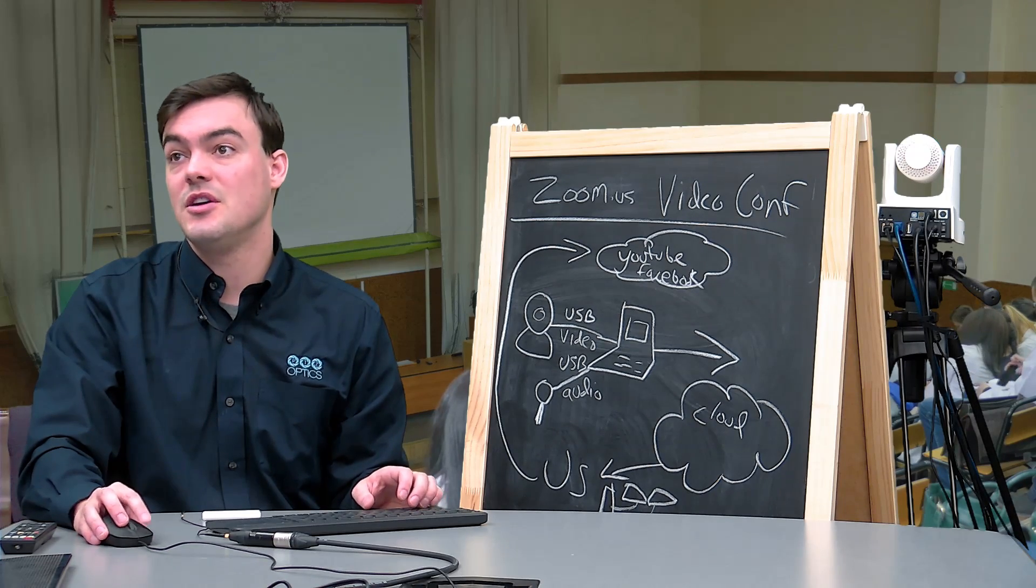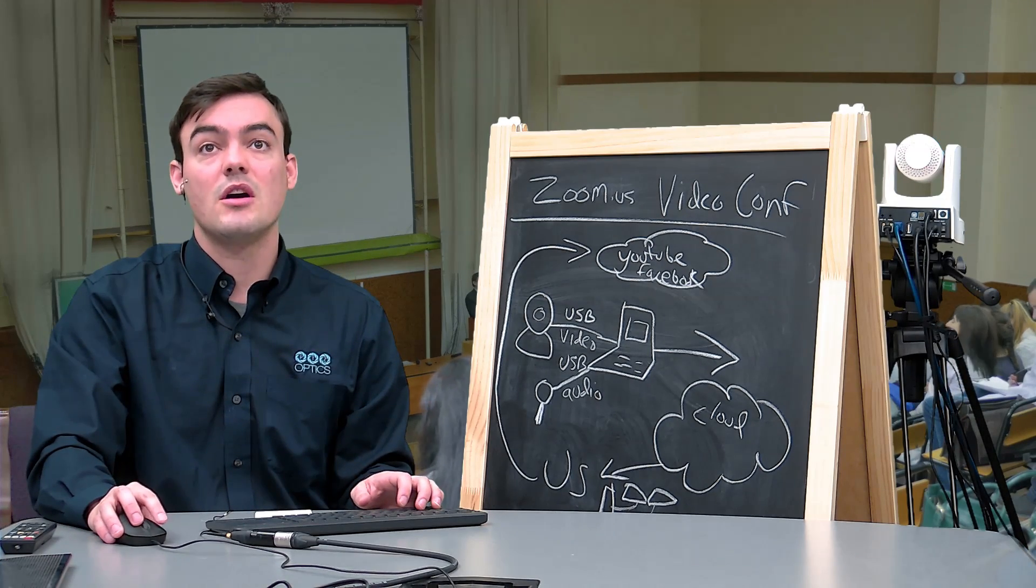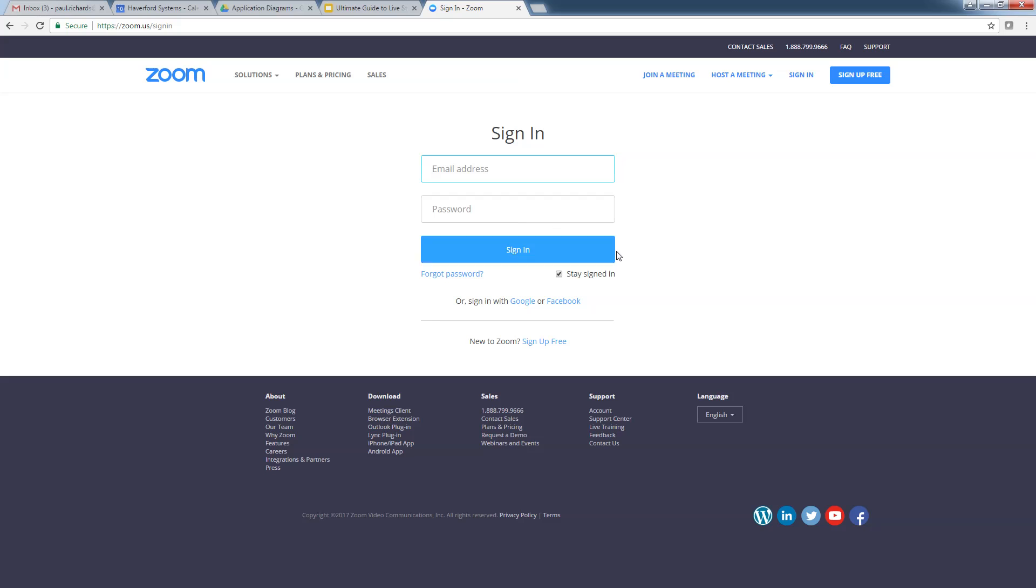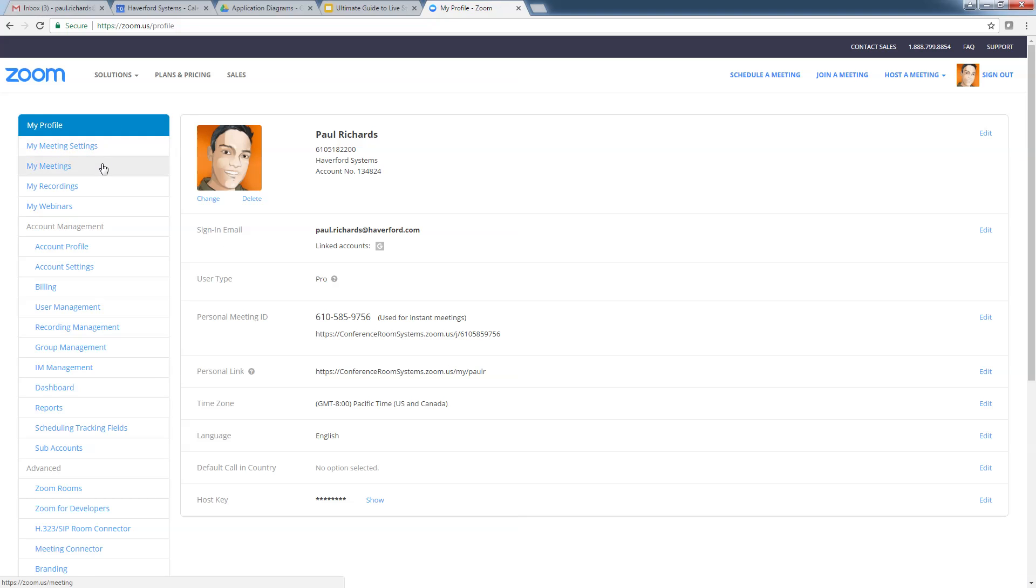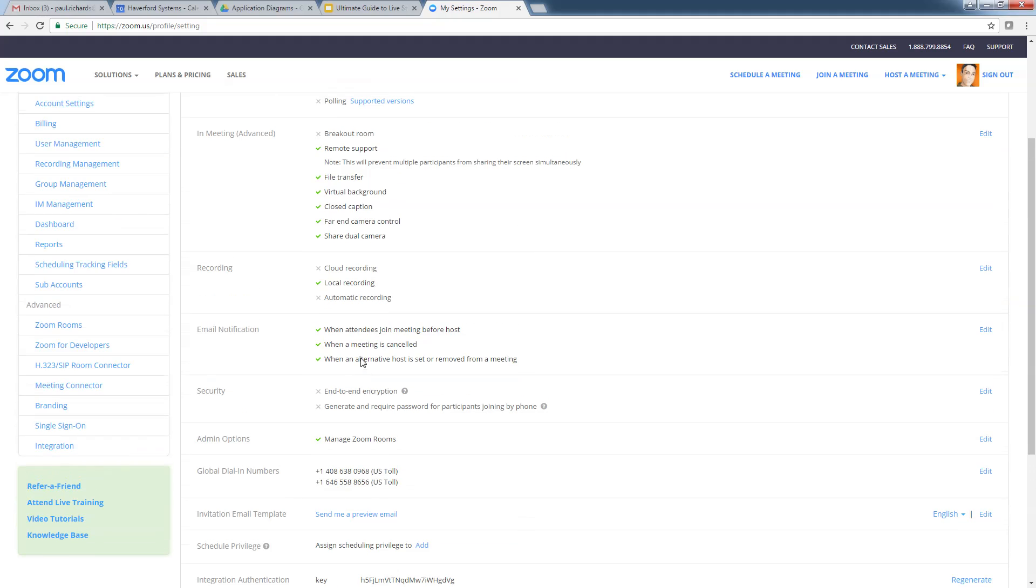One of the things I wanted to mention is when you log into Zoom, in the account management section, what you need to do in the meeting settings is you need to be a manager and you need to allow far-end camera control. Hopefully you guys can see that. I can zoom into it.